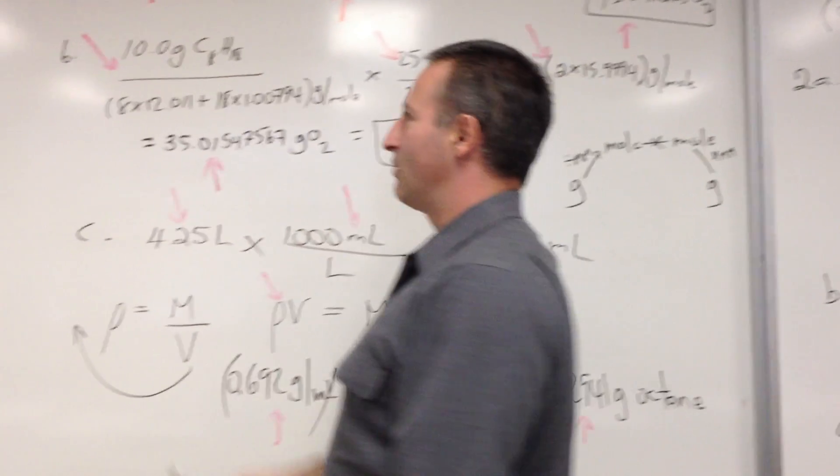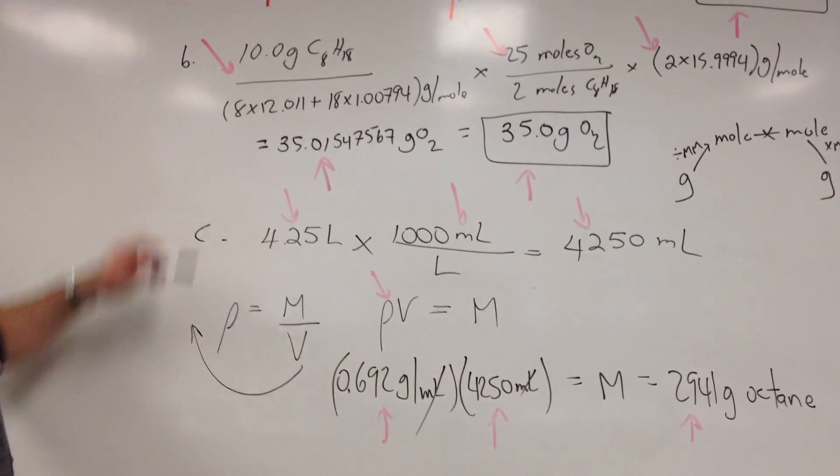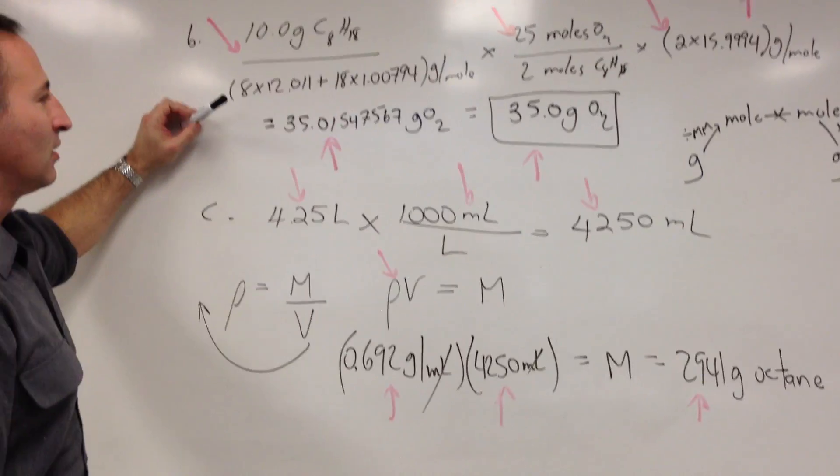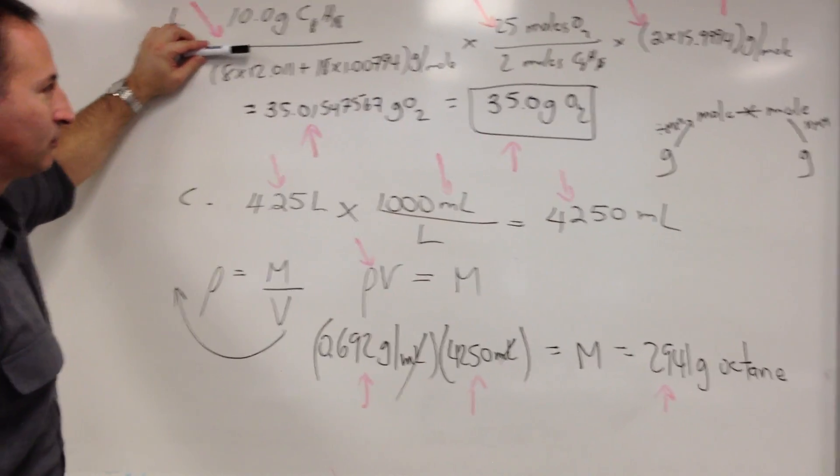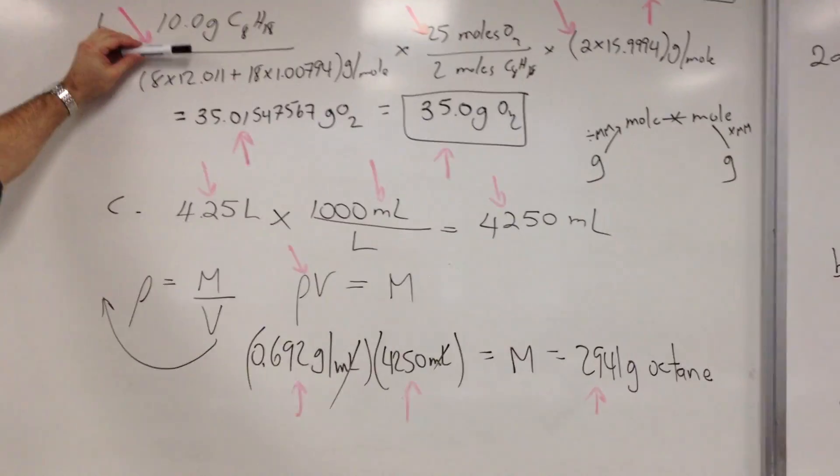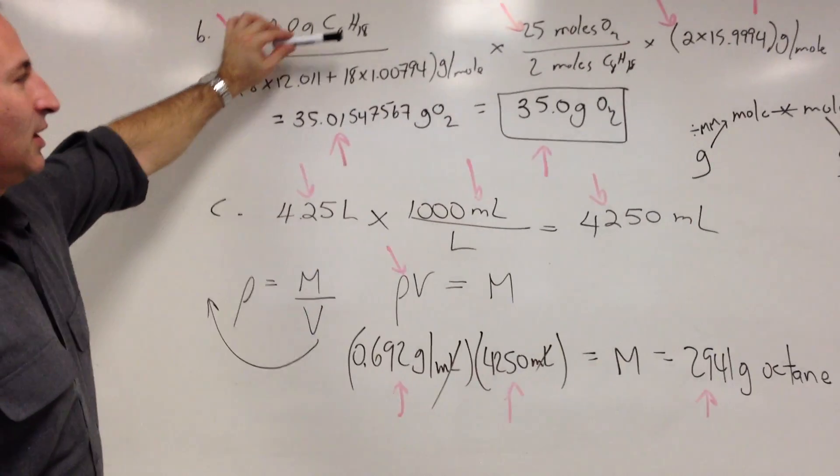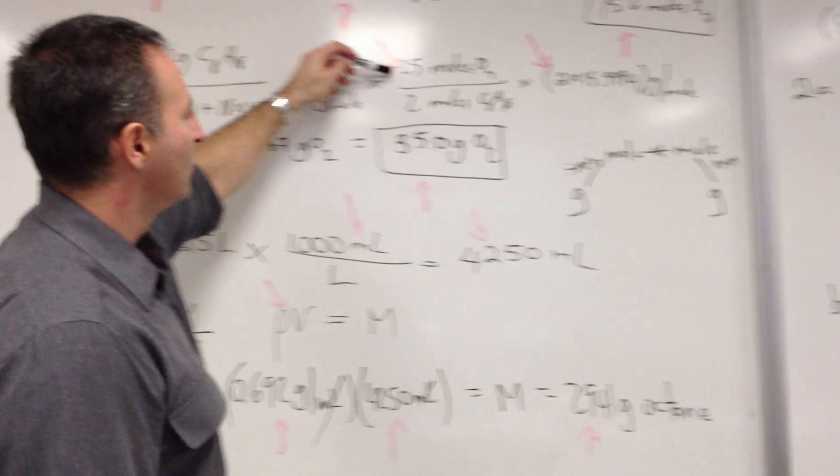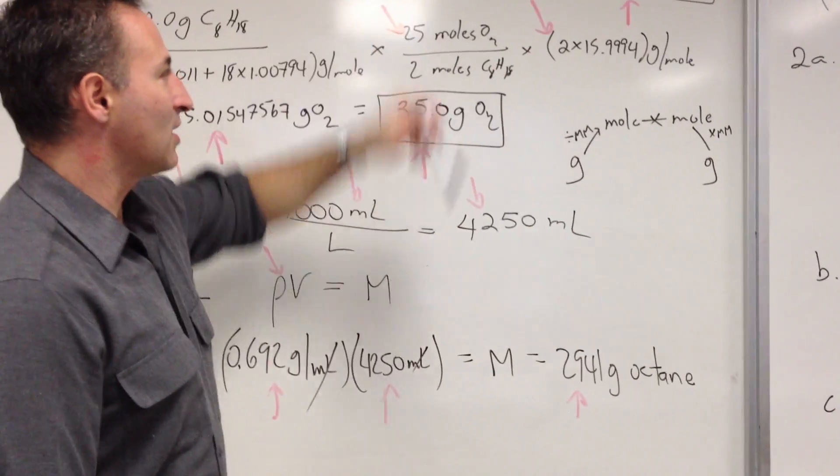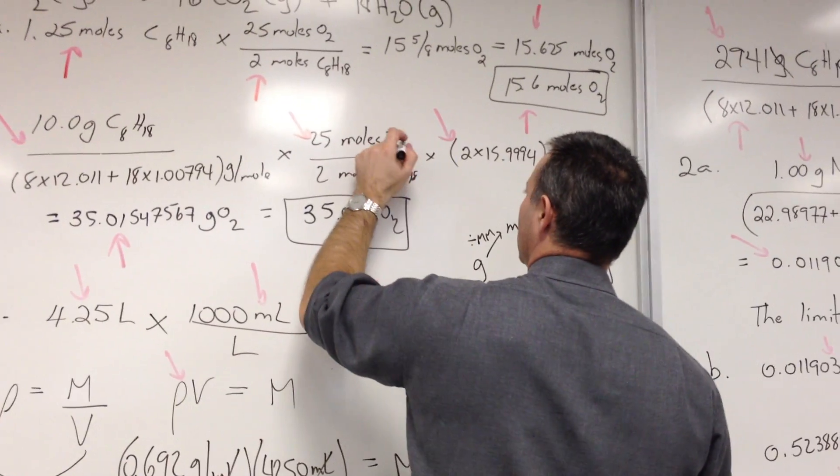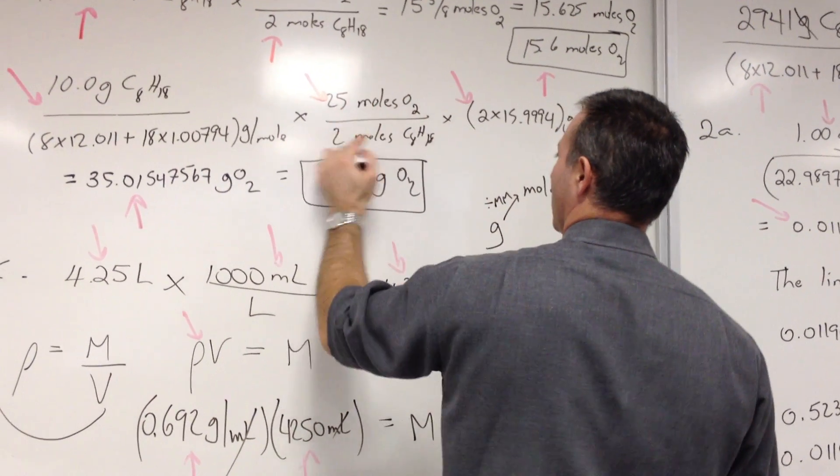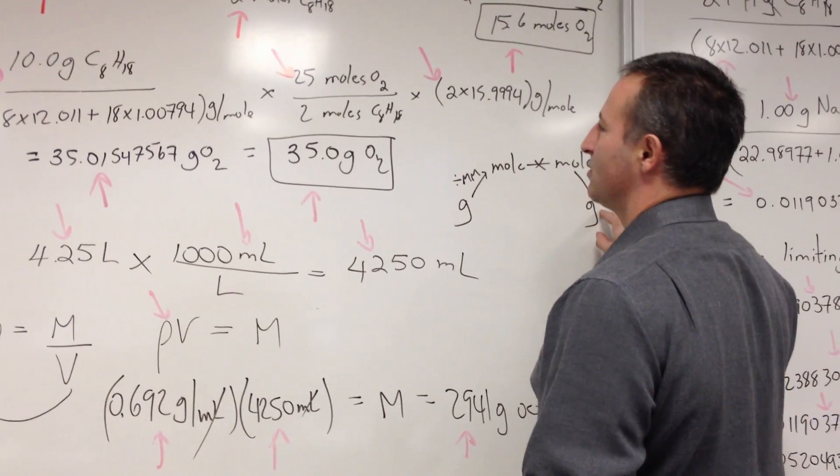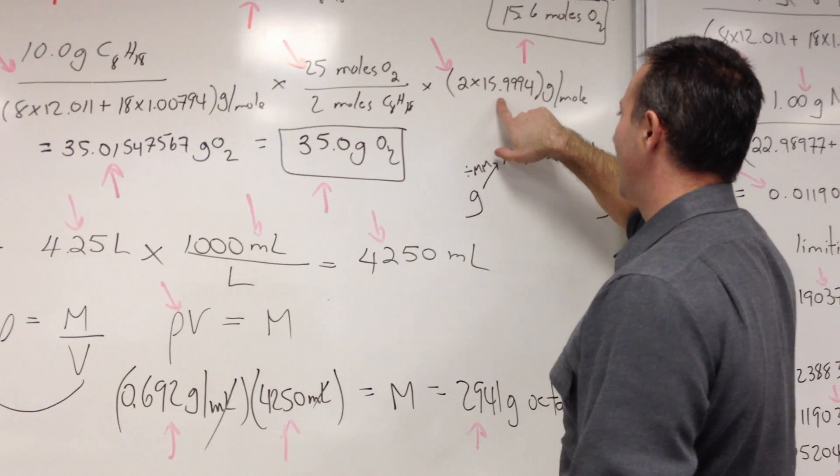So we're starting off with grams of octane. We're going to divide by the molar mass of octane to give us the number of moles of octane. I did it all in one step. So this part gives us the moles of octane. This is the stoichiometry part over here. So it's 25 to 2. 25 moles of oxygen are needed for every 2 moles of octane. And then to convert back to grams of oxygen, I've multiplied by the molar mass of oxygen.